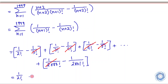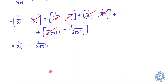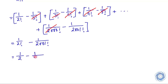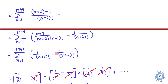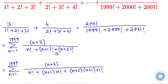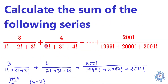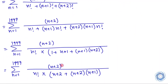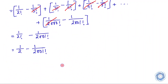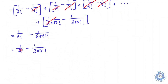We are supposed to find the value of this series, and the sum of the series is given by one half minus one over (2000 factorial). So this is the sum of the series. We are done. Thank you.